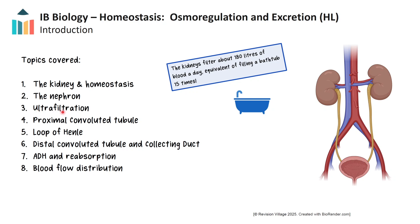We'll look at the process of ultrafiltration, where small molecules are filtered from the blood, followed by the proximal convoluted tubule, where useful substances are reabsorbed. Then we'll examine the loop of Henle and how it creates a concentration gradient to conserve water. From there, we'll move on to the distal convoluted tubule and collecting ducts, where the final adjustments to the filtrate are made. We'll also discuss how the hormone ADH regulates water reabsorption, and finally how the body redirects blood flow to different organs during sleep, rest and exercise.